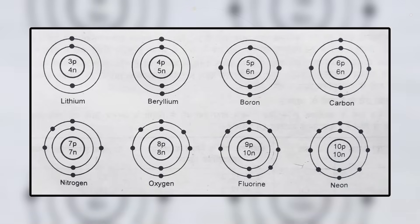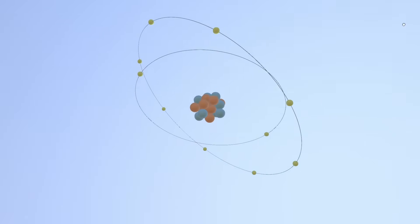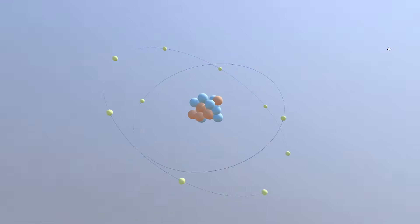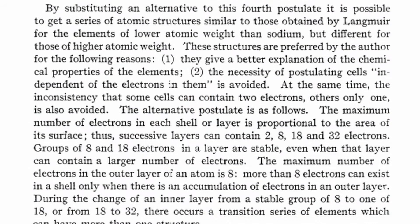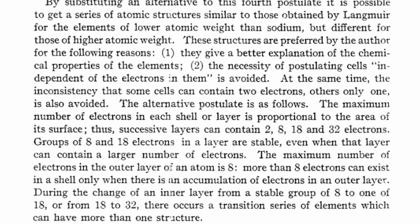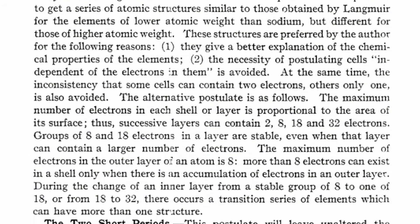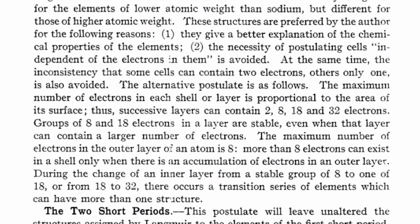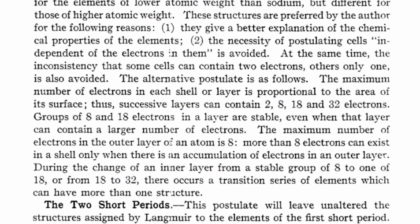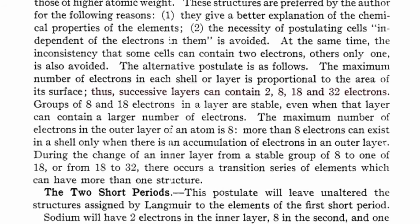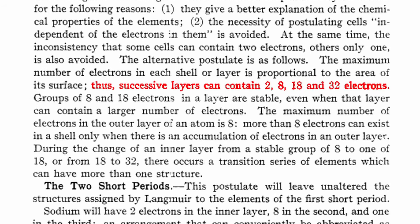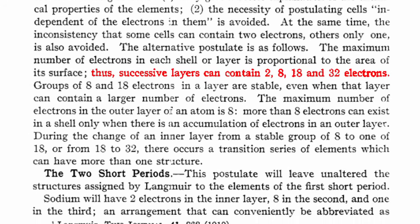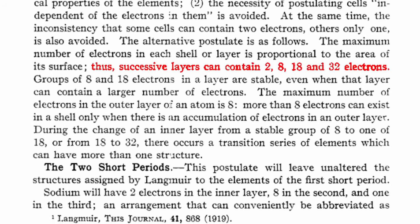Bohr's model stated that electrons orbit the nucleus in distinct energy levels called shells, and Bury added on to that by stating specifically how the shells are filled. According to Bury, the first four energy levels can house 2, 8, 18, and 32 electrons, respectively.